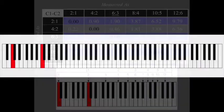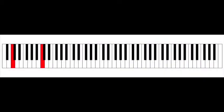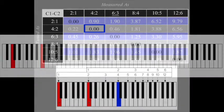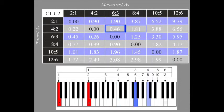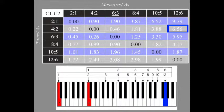We will now examine the octave from C1 to C2 tuned as various octave types, from 4-2 to 12-6. We will use a filter to isolate the beat rates at each partial level for each octave type, starting at the 4-2 level.